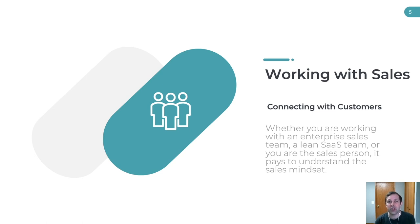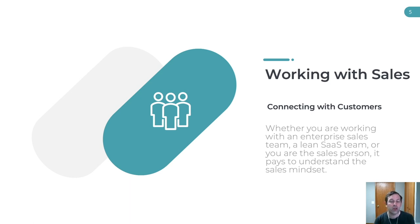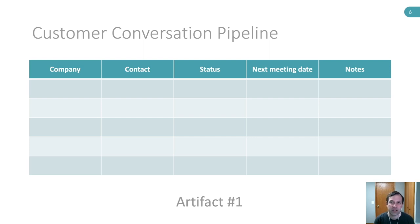A great way to get started contacting customers is to work with the team who contacts customers all the time — the sales team. It might be that your company has an enterprise sales team or a lean SaaS-style sales team, or it might be that you're a CEO or product manager who also wears the sales hat. Regardless, when you want to set up customer meetings it's great to get in the sales mindset. What I do to help set up a pipeline is actually create a spreadsheet — you can use a CRM as well — but a simple spreadsheet shared among people doing those conversations is also a great way to start. It can be very simple: just a list of companies you want to contact. If you're going to try and have 25 to 50 customer conversations, you might need 100 to 200 names on that list.